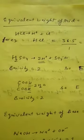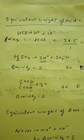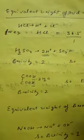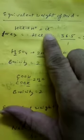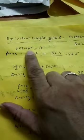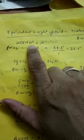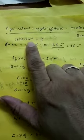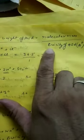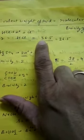Most importantly, how do we calculate the equivalent weight of acids and bases? For an acid, the substance which gives H⁺ ions in aqueous solution — for example, HCl gives H⁺ and Cl⁻, so it is an acid. The number of H⁺ ions released by any acid is called its basicity. If we know the basicity, we can find the equivalent weight. The formula is: equivalent weight of acid equals molecular mass divided by basicity. For HCl, the molar mass is 36.5 and basicity is 1, so equivalent weight is 36.5.